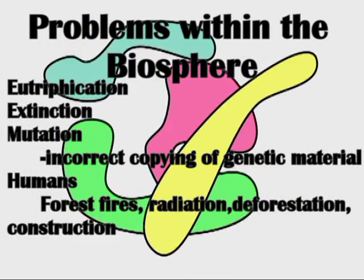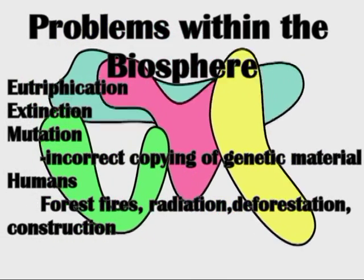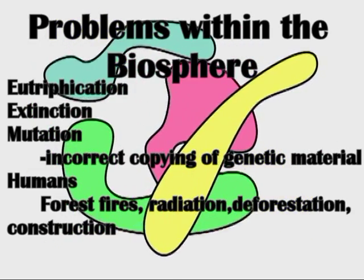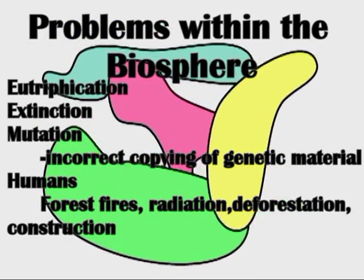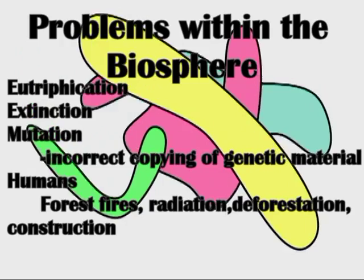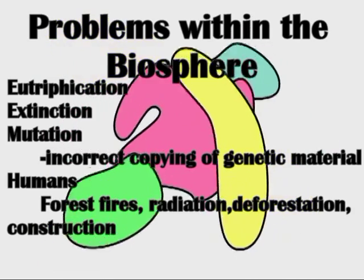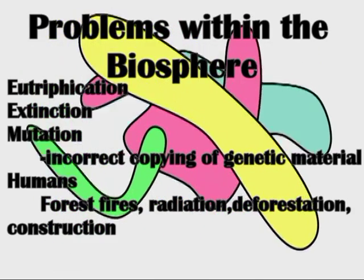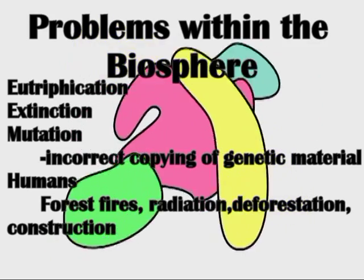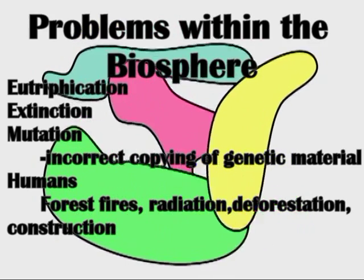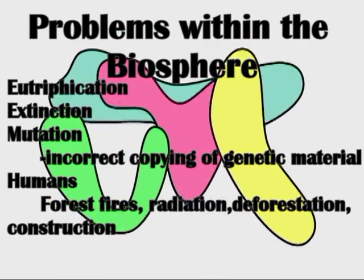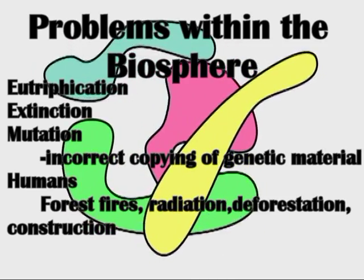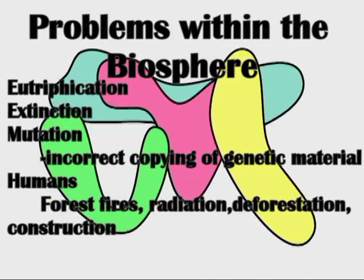Some problems within the biosphere are eutrophication, extinction, and mutation — which is incorrect copies of genetic material and is actually a cause of cancer — and humans. Humans cause things like forest fires, radiation from chemical waste, deforestation, and our construction can damage ecosystems.